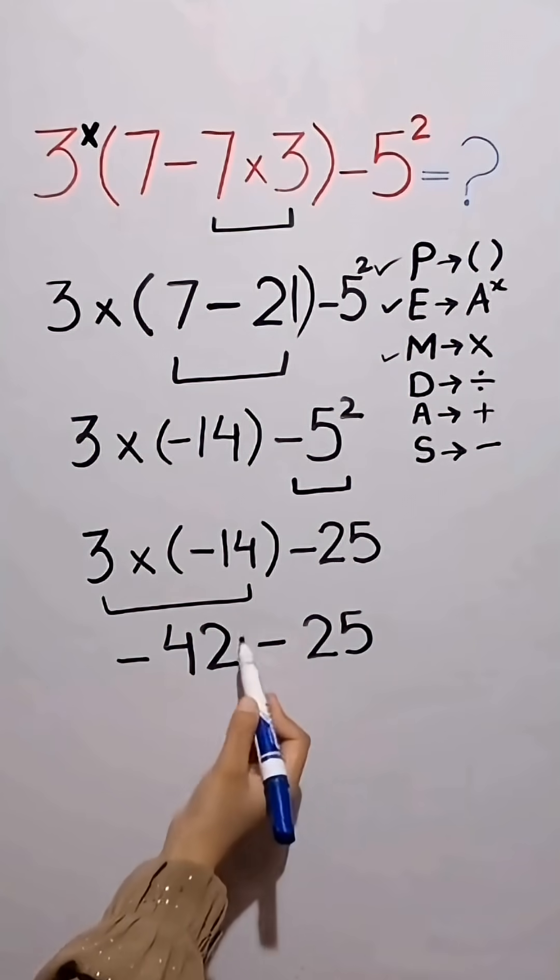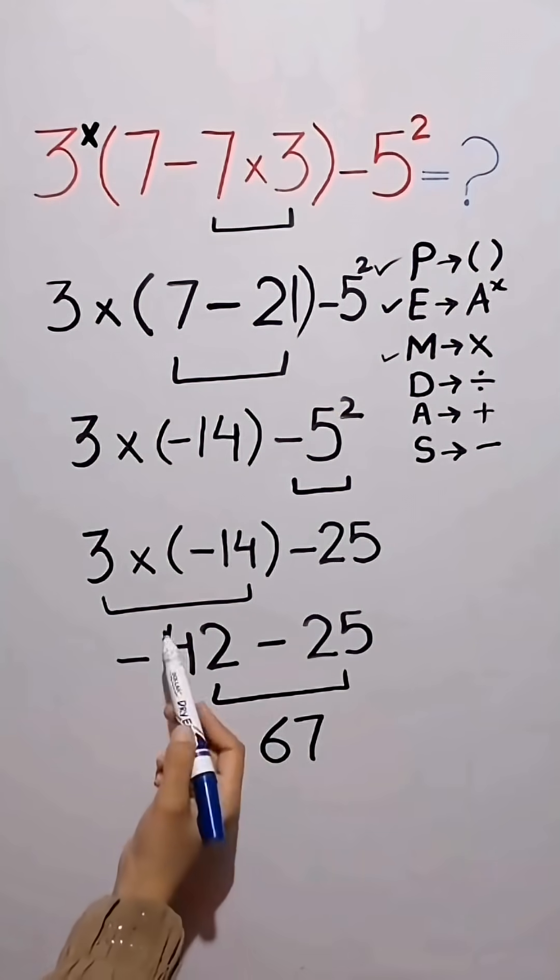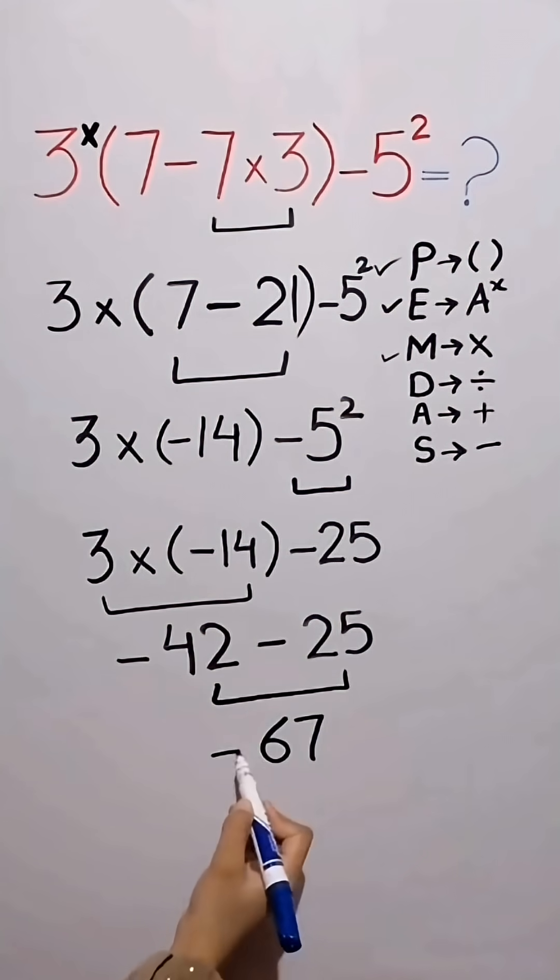When both signs are negative, we add the numbers. Then we keep the negative sign because we're moving further into the negative side.